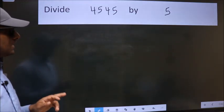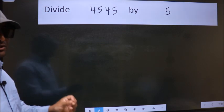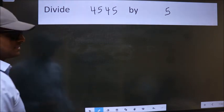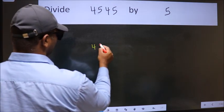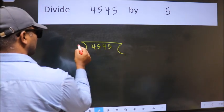Divide 4545 by 5. To do this division, we should frame it in this way: 4545 here, 5 here.